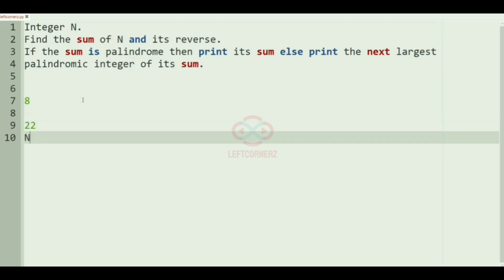Here the integer N is 8, and the reverse of 8 is also 8. Now the sum of N plus reverse is equal to 8 plus 8, that is 16. Now 16 is not a palindromic integer, so we have to print the next largest palindromic integer. We'll iterate over and check for a palindromic integer. 16 is not a palindrome, 17 is not a palindrome, 18 is not a palindrome, 19 is also not a palindrome. Then we go for 20, 21, and 22. Now 22 is a palindrome, so we'll stop the loop here and print 22 as our output.